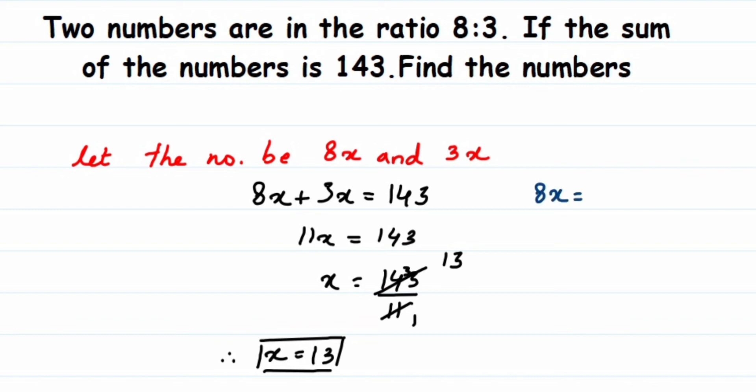So 8x will be nothing but just substitute the value of x here. So it will be 8 times 13, which is nothing but 104. And we have 3x, which is nothing but 3 times 13, which is 39.